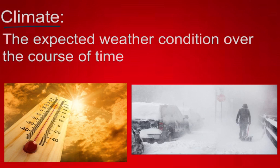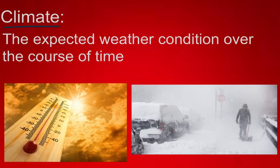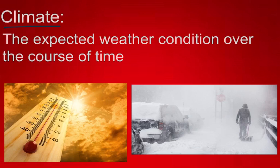Our next vocabulary word is climate. Climate is the expected weather condition over the course of time. Can anybody guess which of these two pictures represents the expected weather conditions in the Rio Grande Valley? Yes, it's this one right here. We pretty much have just one season — hot summers and very warm winters. We never get to see snow; it's very rare when we do. We expect it's not going to change over time, so this is the expected weather condition of the Rio Grande Valley over time.